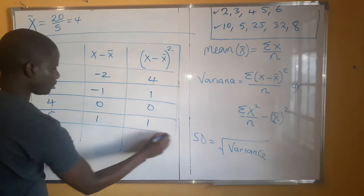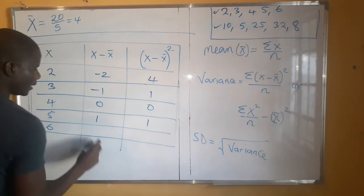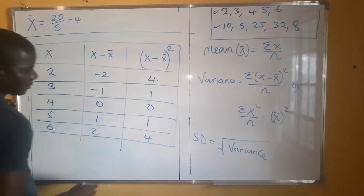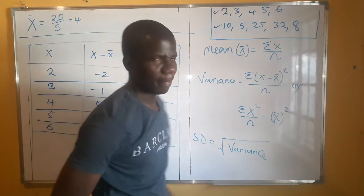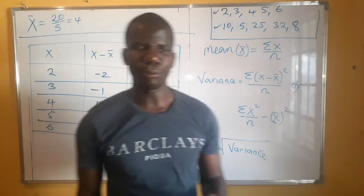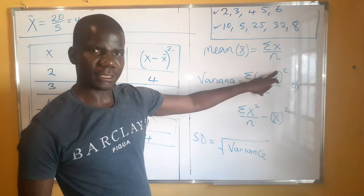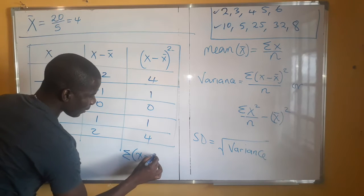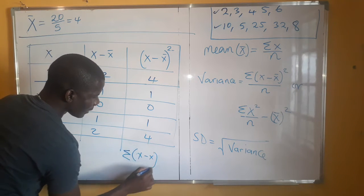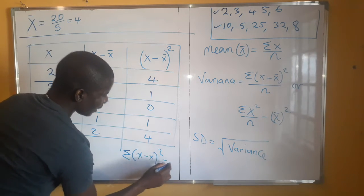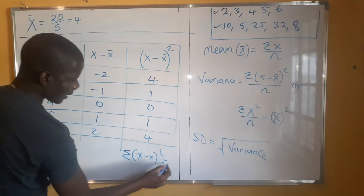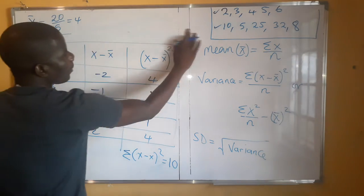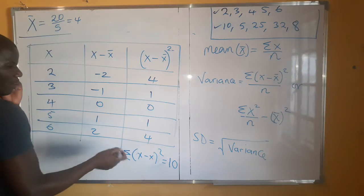Then 6 minus 4 equals 2, squared equals 4. The formula requires the summation of (x minus x-bar) squared. When we add all those squared values — 4, 1, 0, 1, 4 — we get 10. So the summation of (x minus x-bar) squared equals 10.